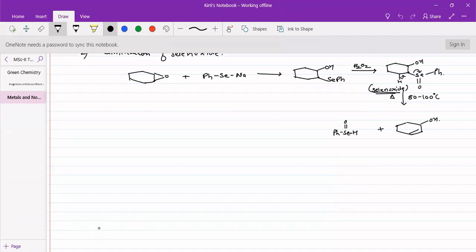Similarly we can do other type of reactions also. If we have OH over here, the selenide will undergo elimination of this hydroxide group as well as the selenium, giving us cyclohexene.